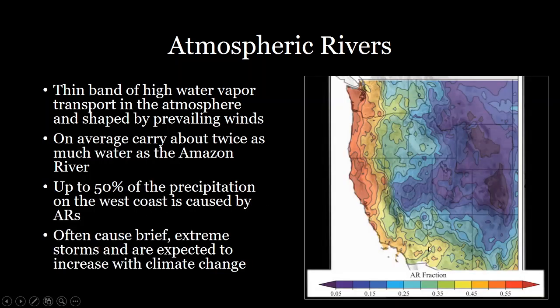You can see here the fraction of total annual rainfall that an area receives from atmospheric rivers. Along the coast of the United States, over half of the rainfall is a result of atmospheric rivers. This is a significant process that really dictates how much rainfall the West Coast receives, and to a lesser extent the East Coast as well.